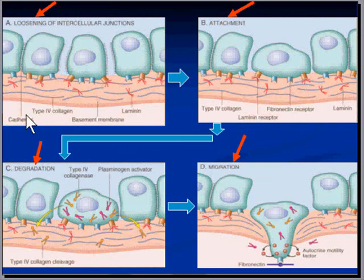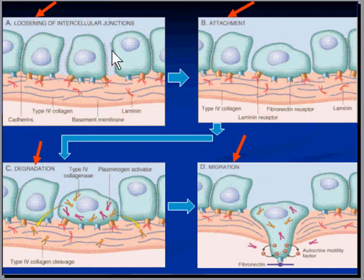Because the loosening occurs when there is breakdown of the cadherins, which keep the normal cells stuck to each other. We have known for a long, long time that cancer cells lose their stickiness, or their normal adhesion to each other.